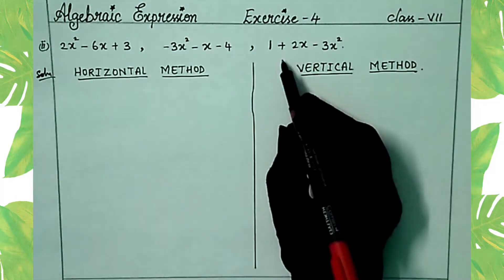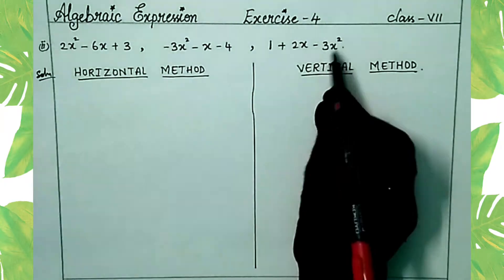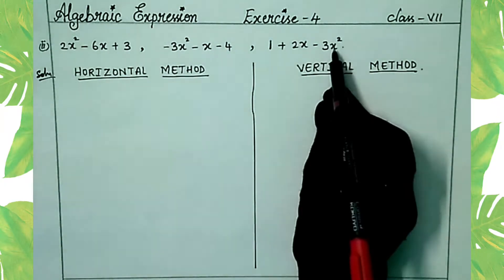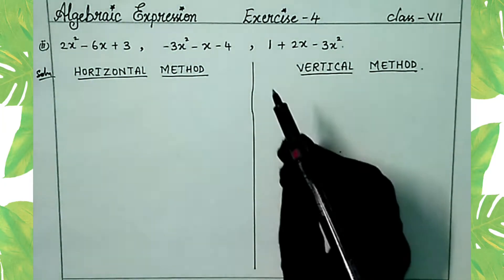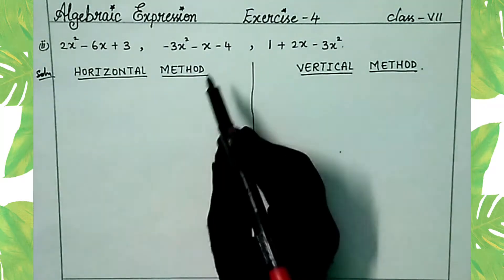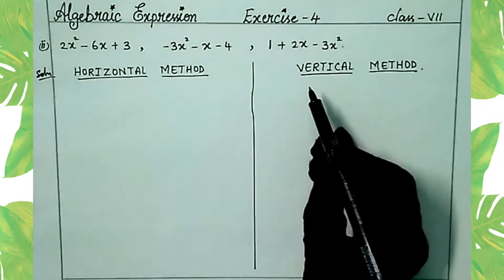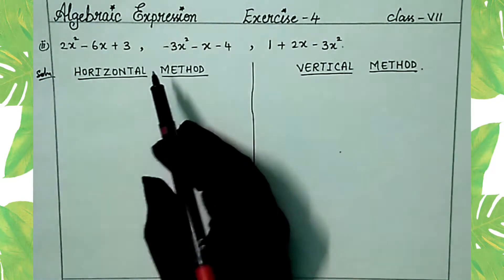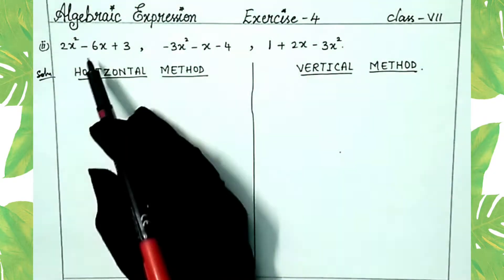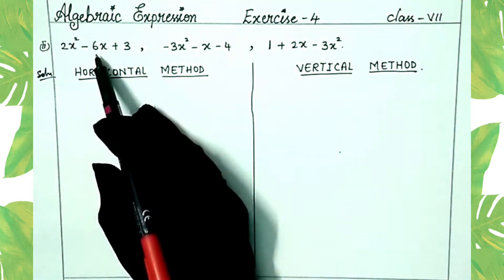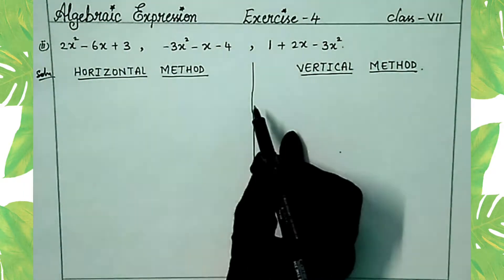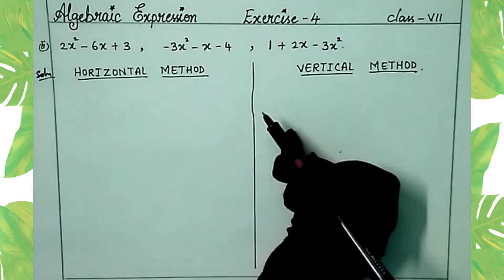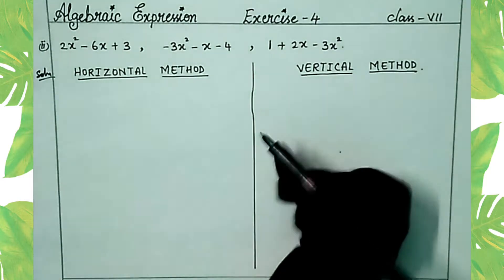Minus 4, plus 1 plus 2x minus 3x². Before this, we have learned how to add two expressions by horizontal method and by vertical method. Now we are learning how to add three expressions with both methods.